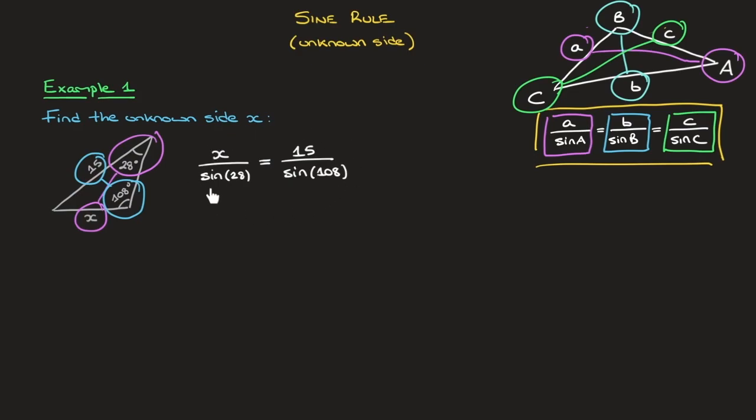All we have to do now is get rid of this sine of 28, which is dividing the X, and for that I multiply both sides of this equation by sine of 28, so I'll just write that, times sine of 28, and that leads to X equals sine of 28 times 15 over sine of 108.